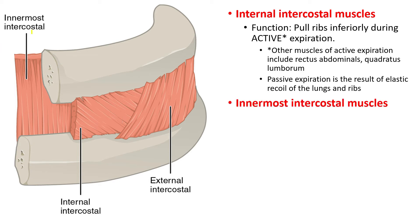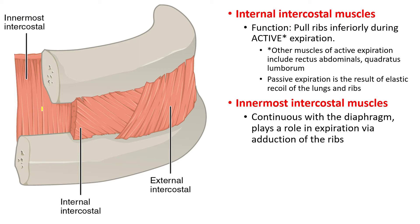Next, let's talk about the innermost intercostal muscles. These are continuous with the diaphragm, and they also play a role in expiration by adducting the ribs.